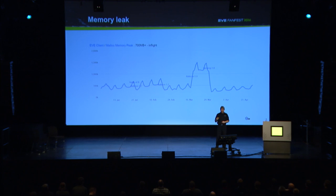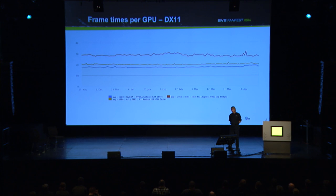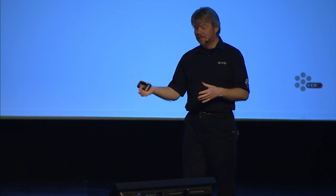That sawtooth pattern corresponds to weekends — this is based on counting sessions and EVE is more active on weekends in general. Another type of metric we graph is the frame times. These are average frame times, just for clients running DirectX 11, for three different types of GPUs. This is something we can look at to verify, especially after larger patches, that things are overall working as well as they were before.